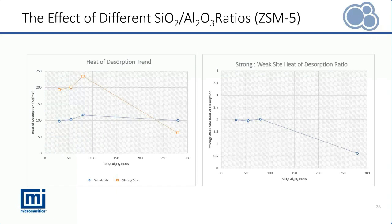However, the 280 to 1 sample doesn't follow this trend. This seems to reflect the difficulty associated with analyzing a material with very little acidity. As the ratio increases, the number of acid sites decreases and the material becomes more hydrophobic, so there may be more difficulty in accurately measuring the acidity. The graph on the right plots the strong to weak site heat of desorption ratio, which nicely depicts how the binding strength of the strong sites is consistently twice as strong as that of the weak sites. Again, the 280 to 1 sample falls out of trend due to this experimental limitation.